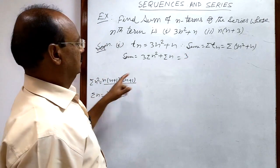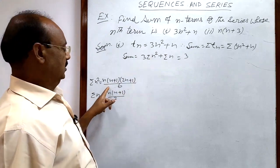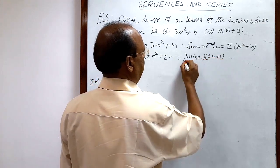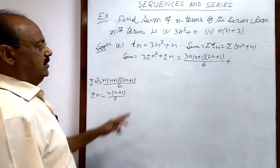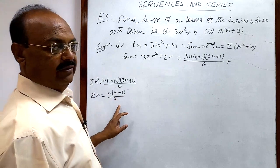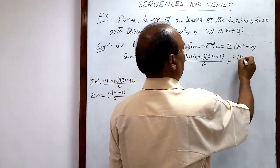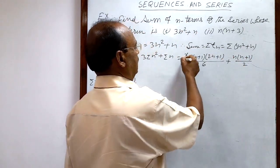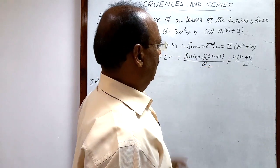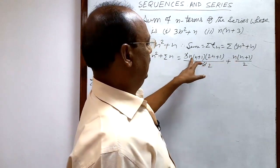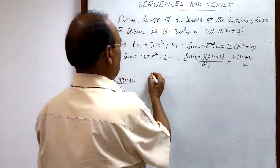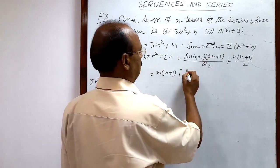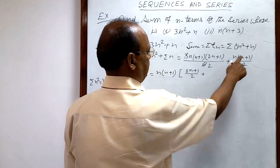Substituting these values: the sum is 3 · [n(n+1)(2n+1)/6] + [n(n+1)/2]. Here, 3 cancels with 6 leaving 2, so the first term becomes n(n+1)(2n+1)/2. The second term is n(n+1)/2. Now n(n+1) is common in both terms.